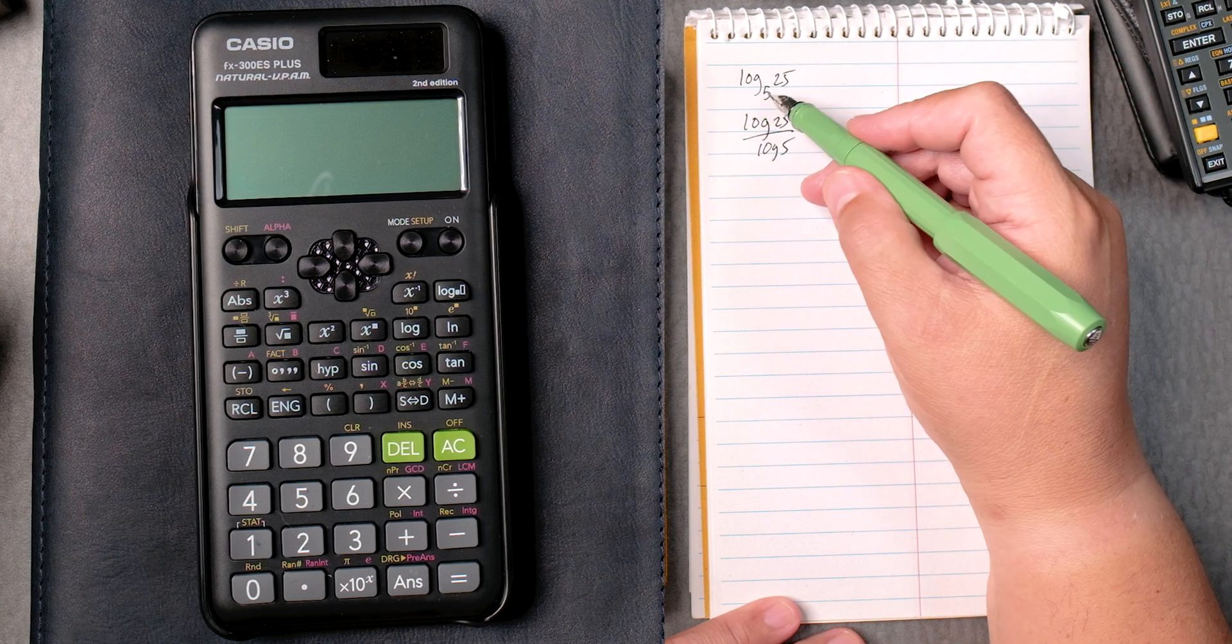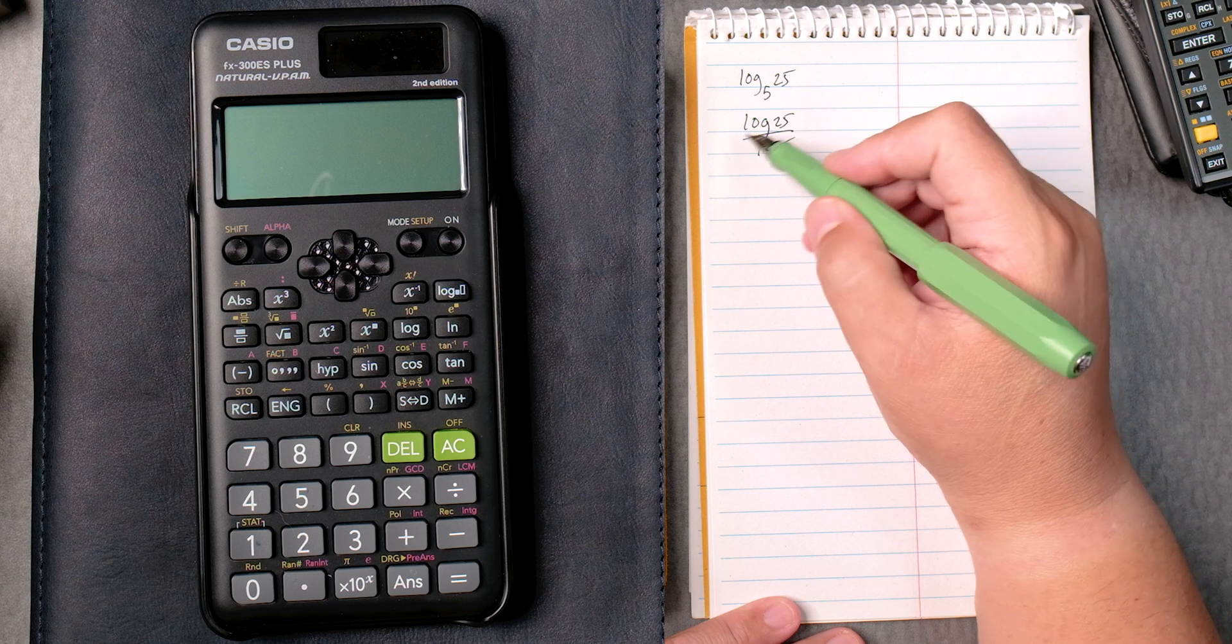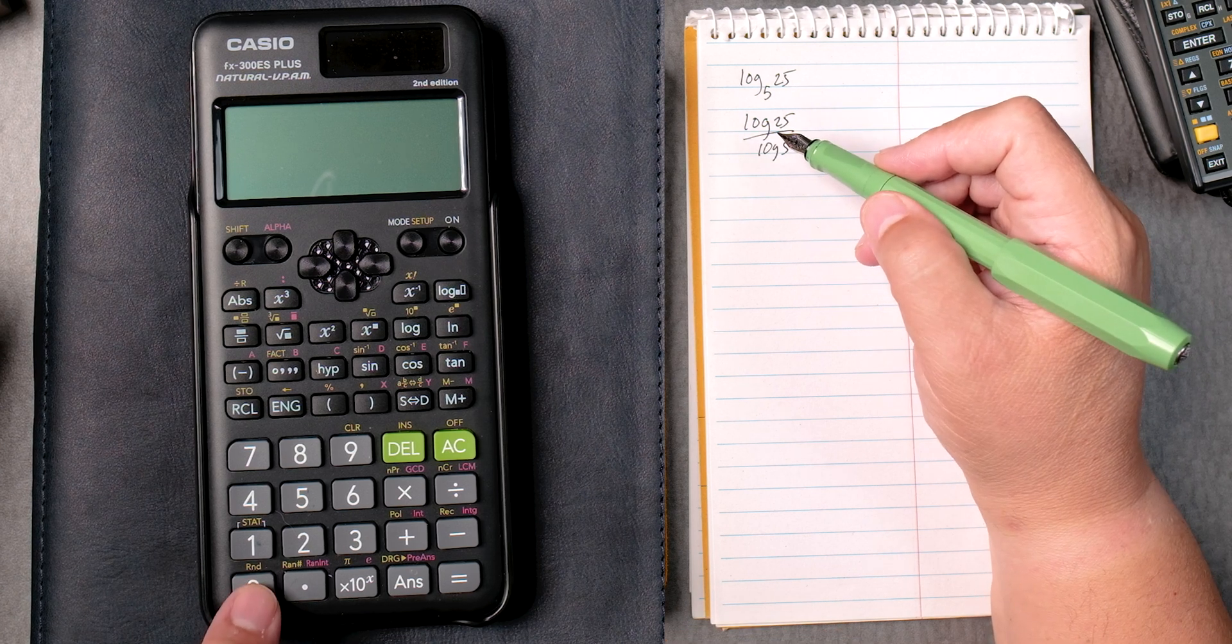The way to remember it, the 5 is on the bottom, the 25 is on the top. You take the log on the top and the bottom.